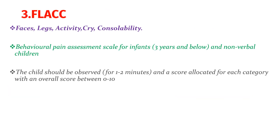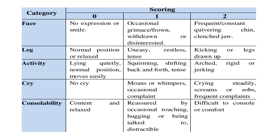The third tool is Face, Legs, Activity, Cry and Consolability (FLACC) — a behavioral pain assessment scale for infants (3 years and below) and non-verbal children. The child should be observed for 1 to 2 minutes and scores are recorded for each category, with an overall score between 0 and 10. Using the scoring table, each category is scored 0, 1, or 2, and the scores are summed. A score of 0 means no pain; 1–3 is mild; 4–6 is moderate; 7 and above is severe.